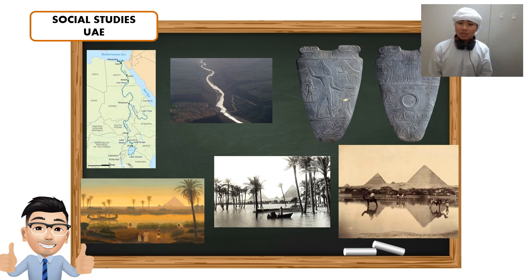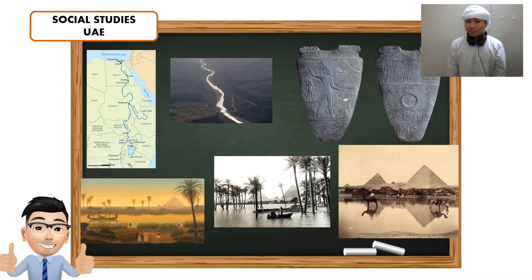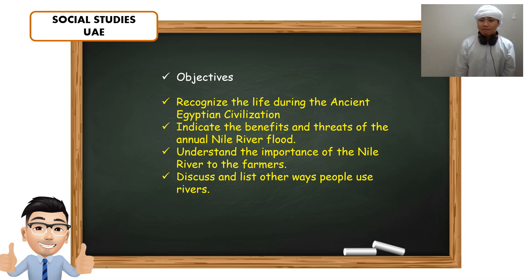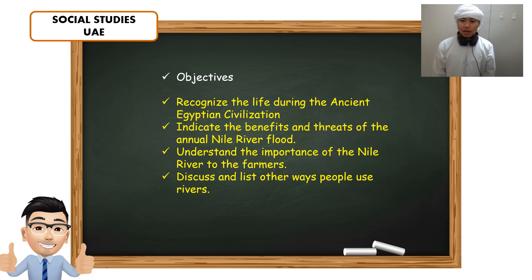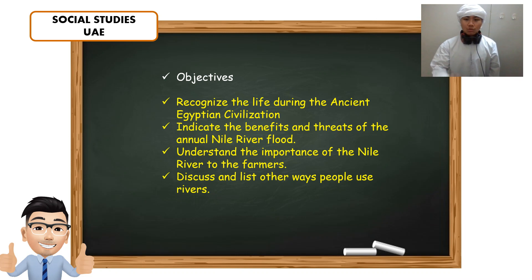Parasites are very dangerous for them. They get sick because of malaria. But for Egyptians, the flood is a blessing, source of life, at the same time, death. So are you ready for our activity? Let's get into it. Yesterday, we were able to talk about the ancient Egypt and the Nile River. We were able to recognize the life during the ancient Egyptian civilization, indicate the benefits and threats of the annual Nile River flood, understand the importance of the Nile River to the farmers, and discuss and list other ways people use rivers.